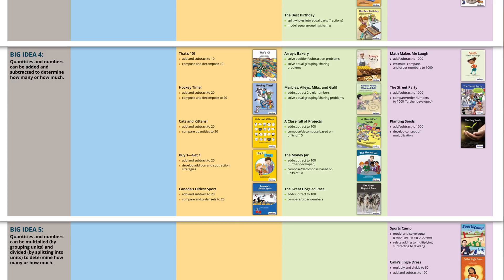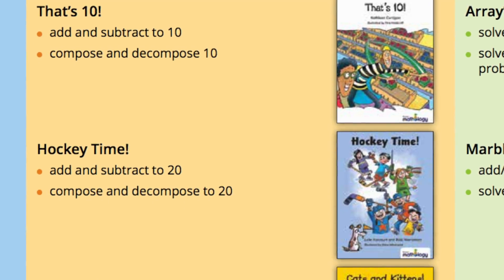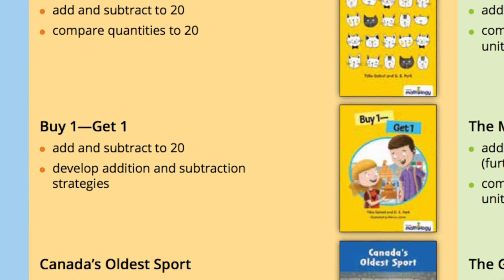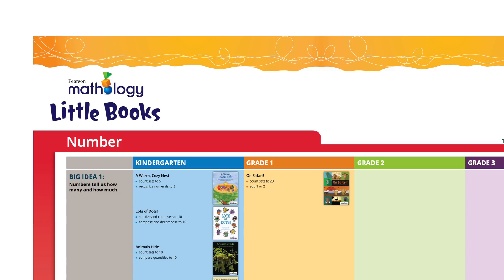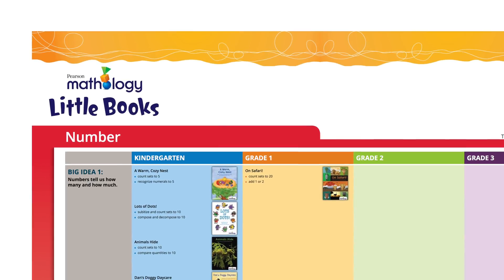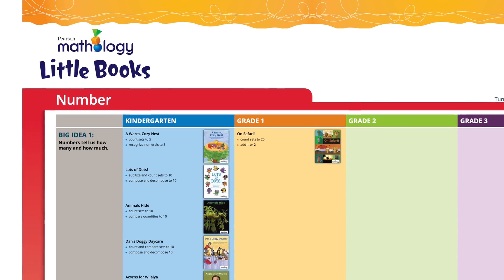Let's look at number, Big Idea 4: Quantities and numbers can be added and subtracted to determine how many or how much. You can see the development of the big ideas through the books listed. This same information is featured in the Getting Started Guide.